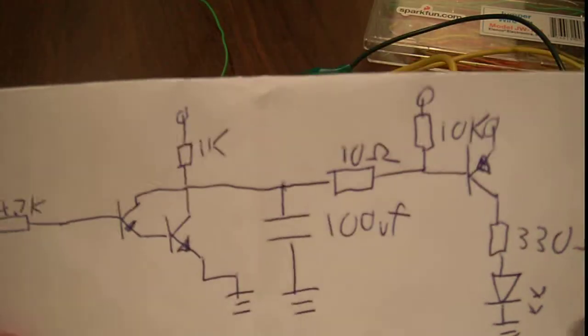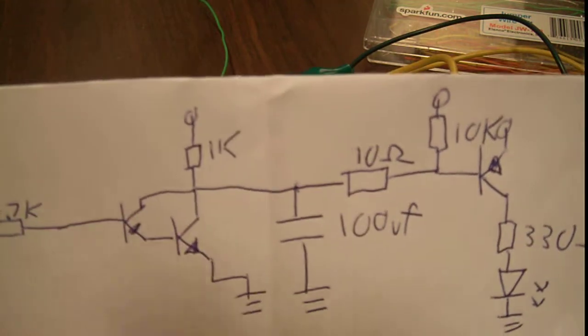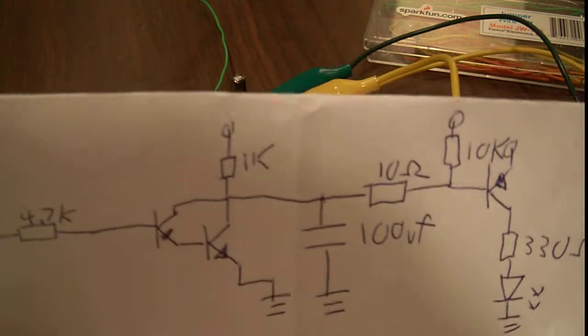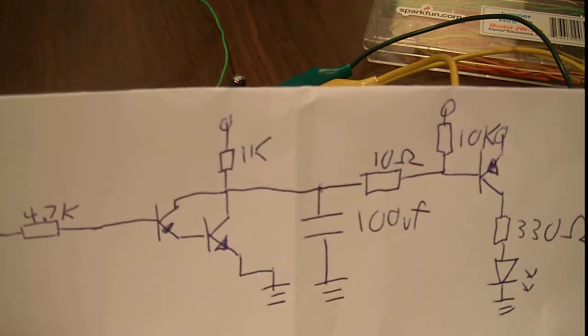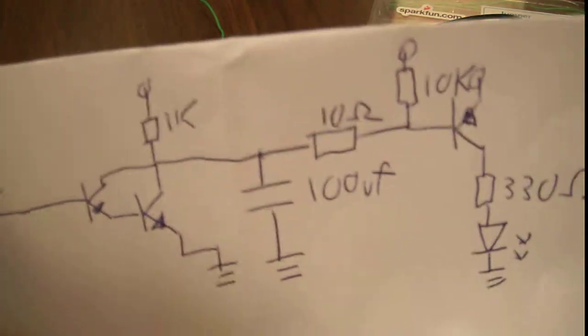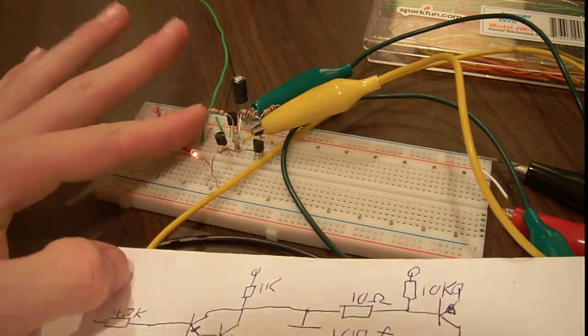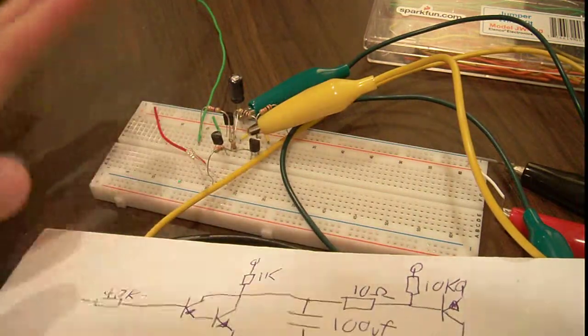And what this capacitor does is it sort of smooths out the wave a bit. It turns an AC signal into more or less a DC signal. More or less, it doesn't do that so well, but it does help so that your LED isn't blinking on and off at 60 hertz. So you can see when I turn it on, it's on consistently. No blinking, right?